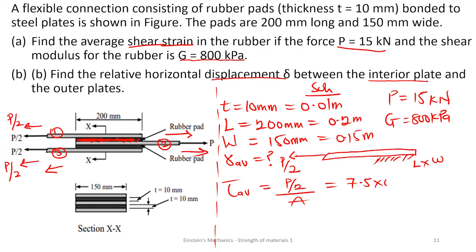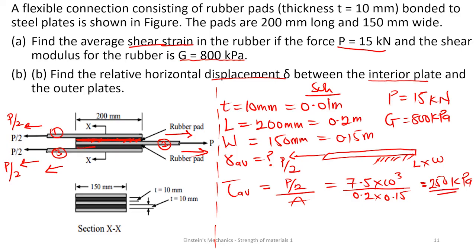The area of the sliding surface is rectangular, given as length by width. We know the length is 0.2 meters and the width is 0.15 meters. Substituting these values gives us a shear stress of 250 kilopascals — so the shear stress at the sliding surface is 250 kilopascals.